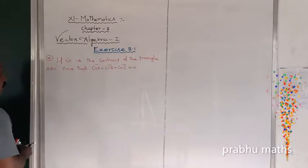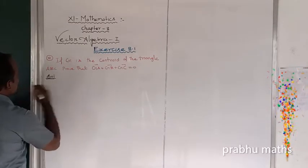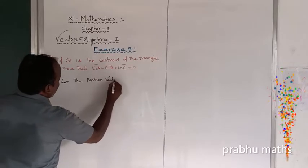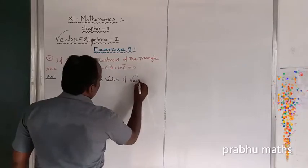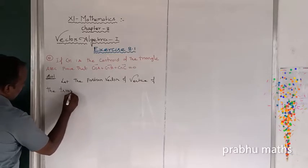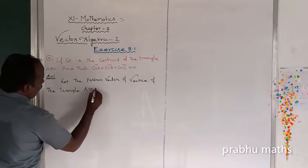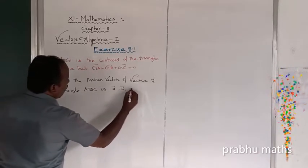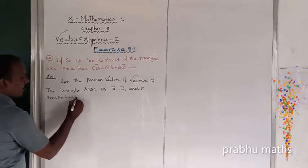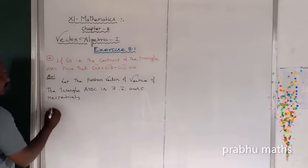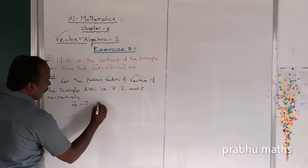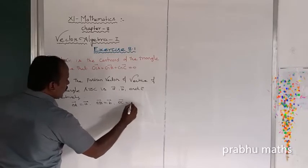Solution. First of all, let the position vectors of vertices of the triangle A, B, C be vector a, vector b, and vector c respectively. Now, next G is a centroid. So OA vector is equal to a vector, OB vector is equal to b vector, OC vector is equal to c vector.